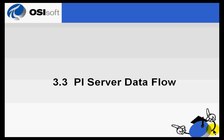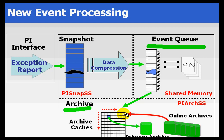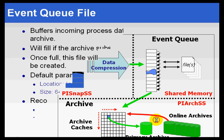Section 3.3: PI Server Data Flow. In this section, we are going to round out some of the things from the illustration we have seen before. We will talk about the Event Queue, the Archive, and some of the other structures you will see as the data moves towards the actual online archives.